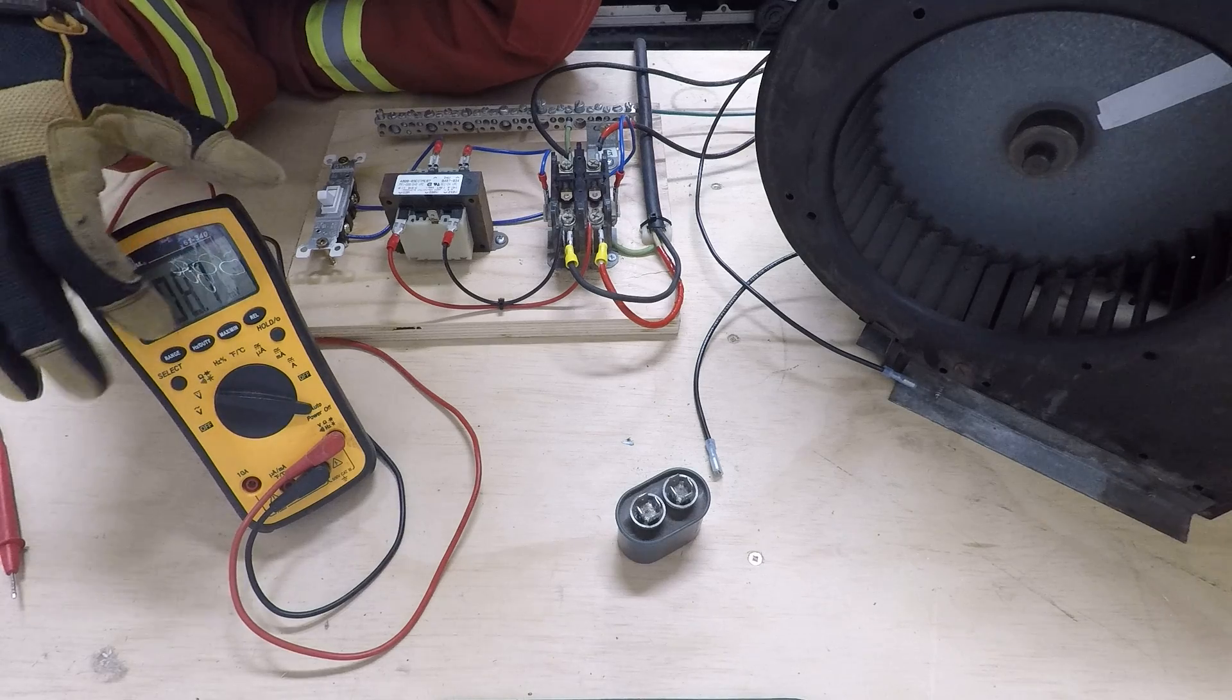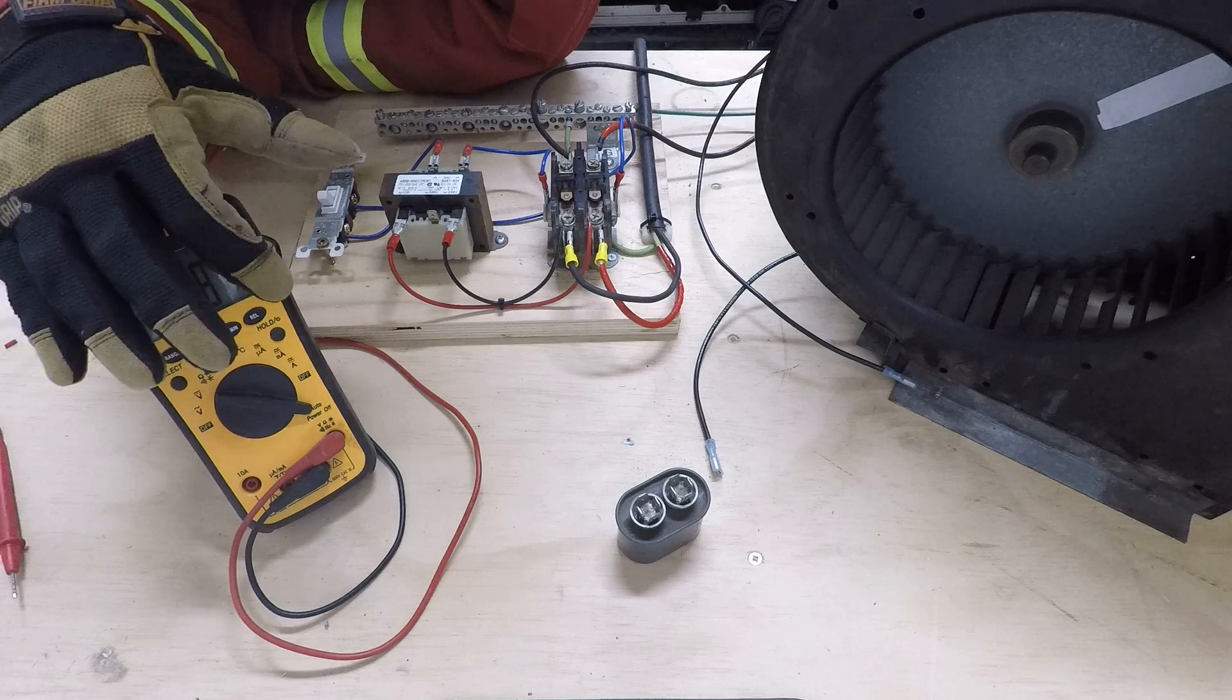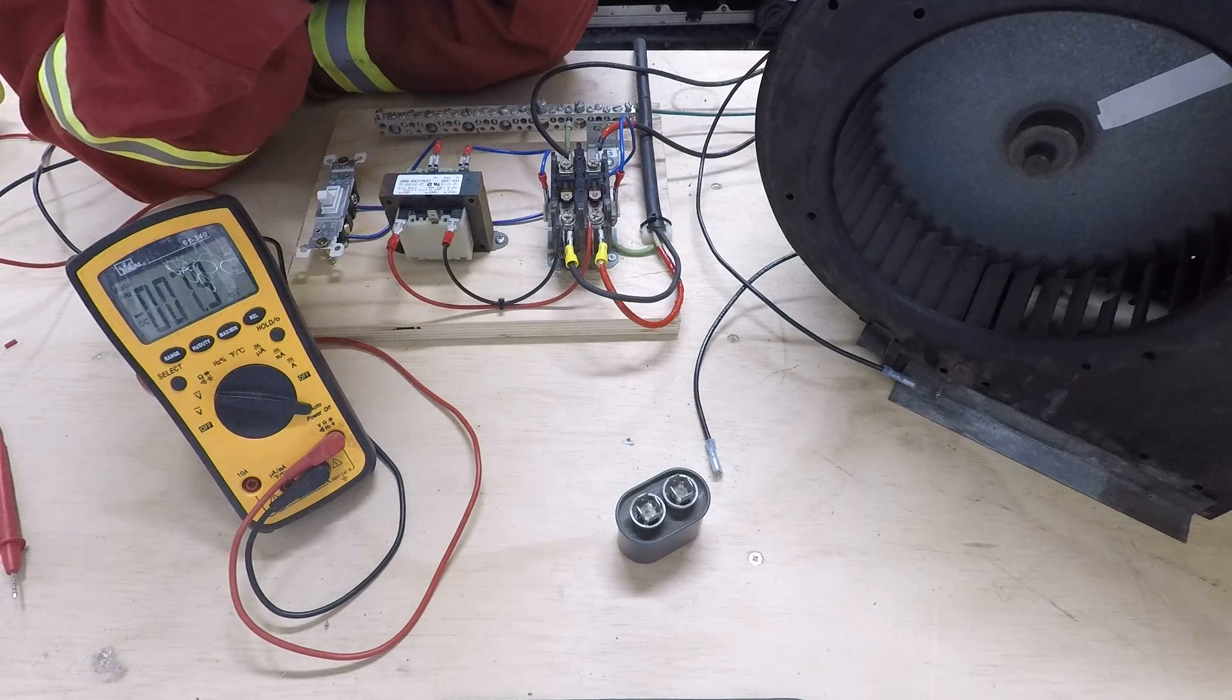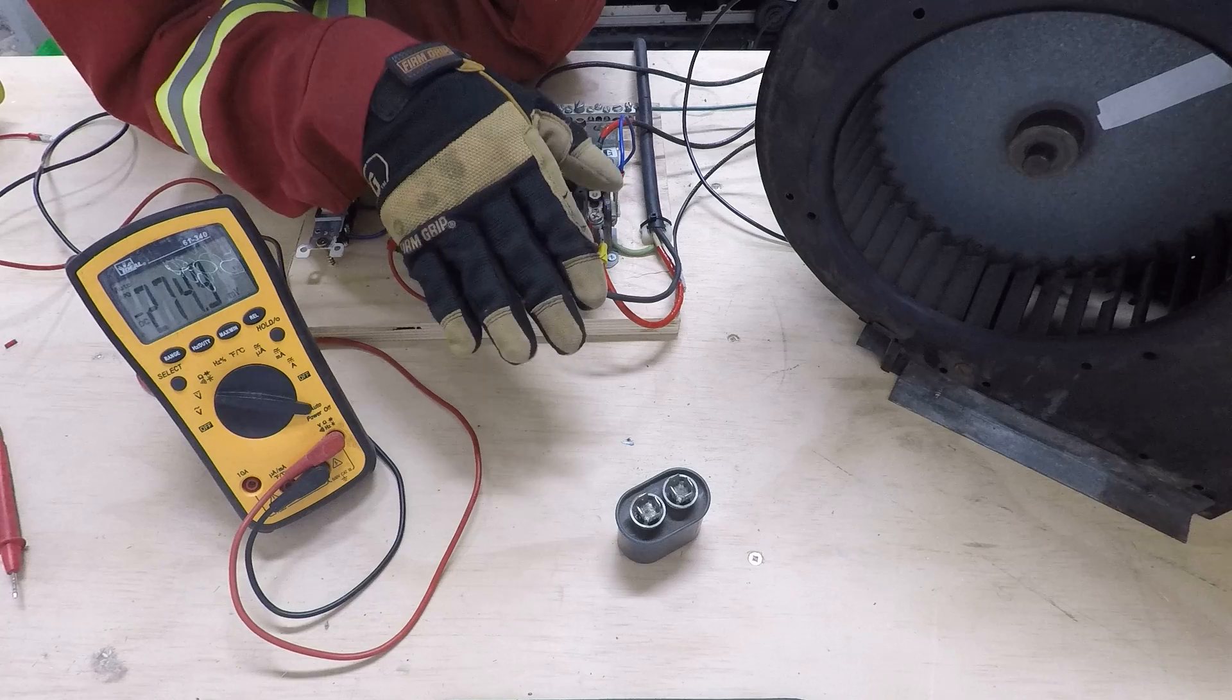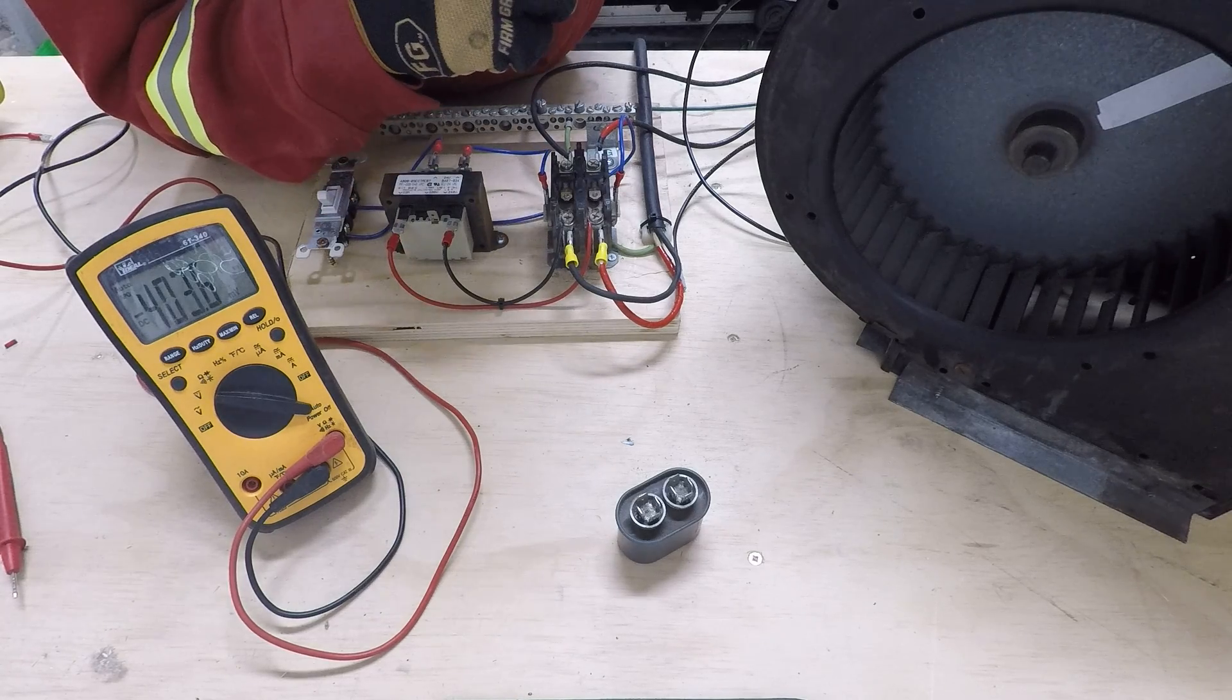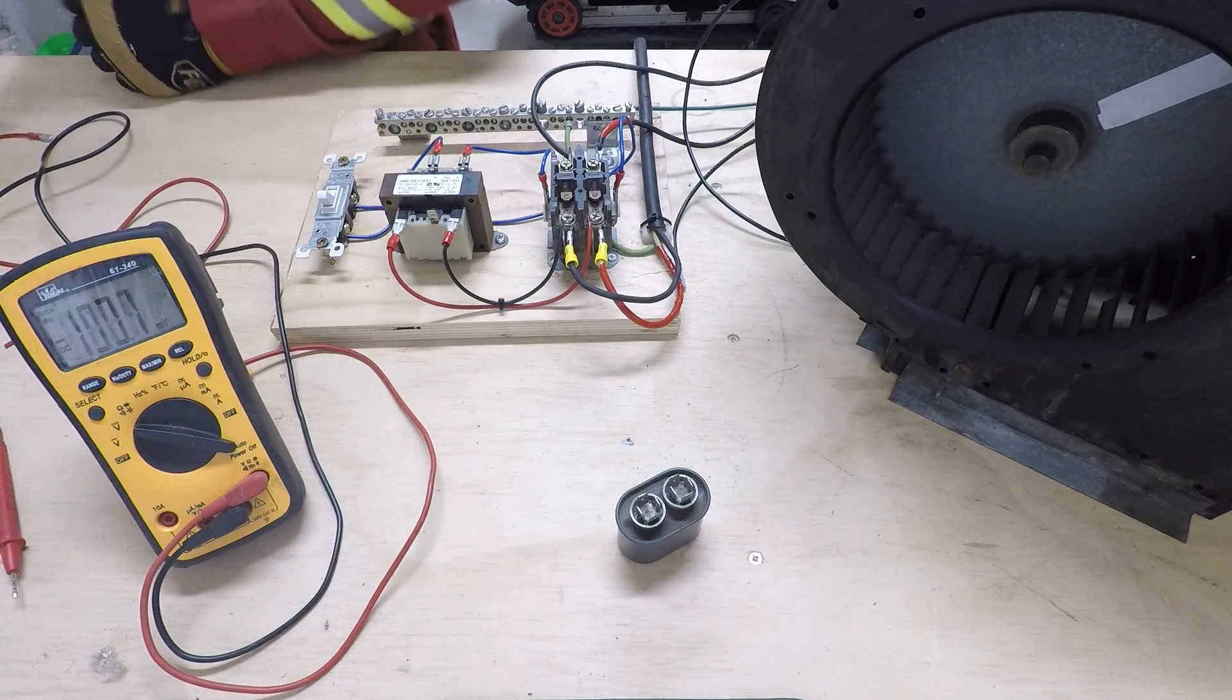So we've got a hot capacitor right now. The proper way to discharge this would be to take a bleed resistor and short it across the terminals safely in a safe manner, so that you're not creating an arc for yourself or anything like that. But a lot of guys what they'll do is take the screwdriver, the metal shaft of a screwdriver, and short it across the contacts.